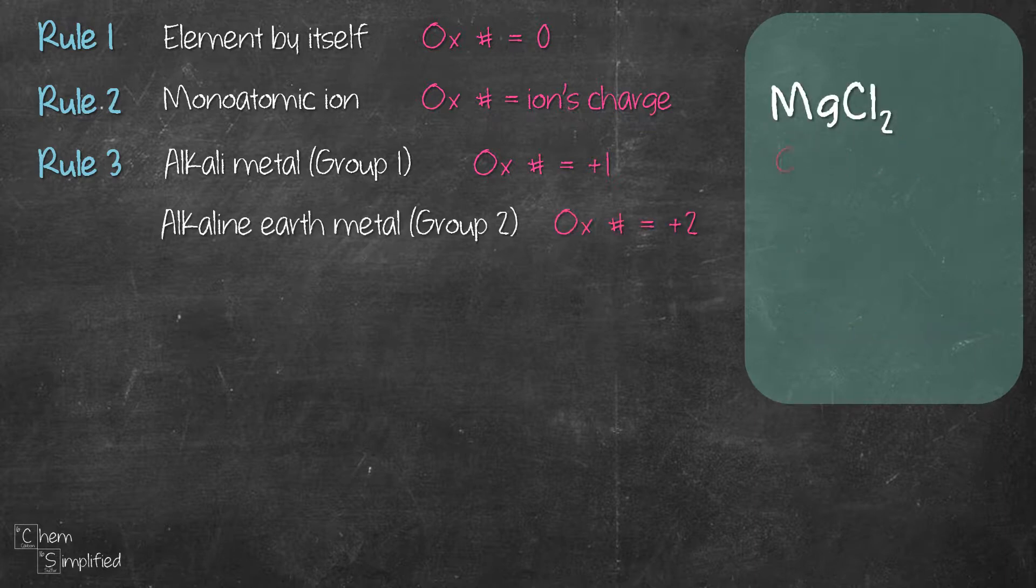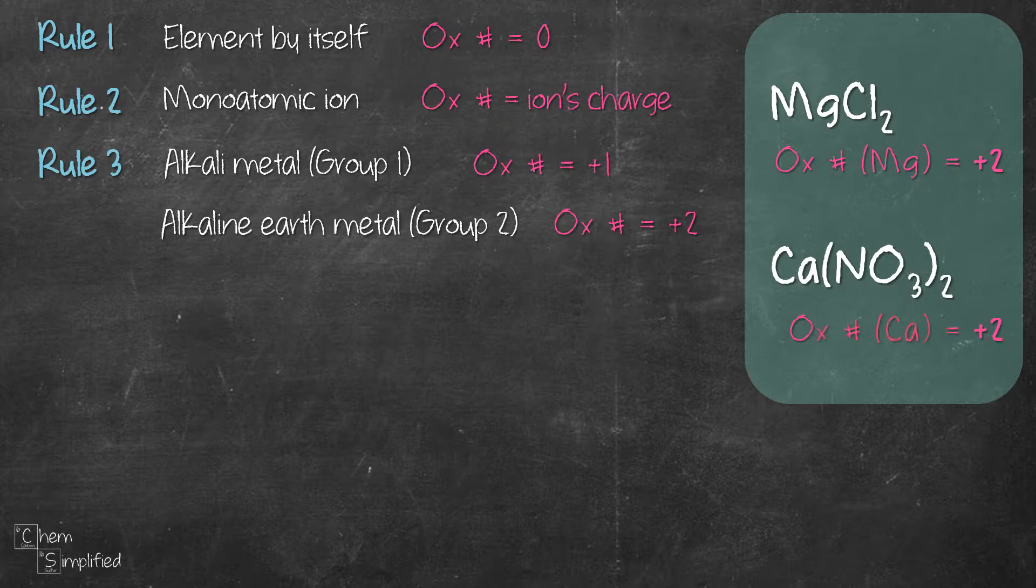Same goes to group two, the alkaline earth metals. Their oxidation number is always going to be plus two in a compound. For example, the oxidation number of Mg in MgCl2 is plus two. Same goes to Ca in calcium nitrate. It's plus two.